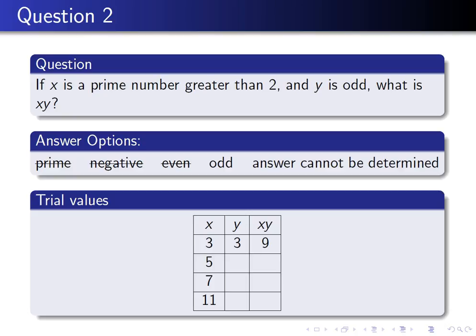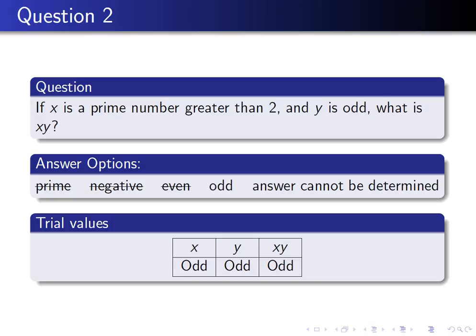I wanted to do some more trial values so I thought, what are the other prime numbers? 3, 5, 7, 11—these are all prime numbers. But I'm actually starting to see a pattern already so I'm going to jump straight onto step 3 and I'm going to say that X must be odd because the only even prime number is 2 and we know that X is not 2, and Y must be odd. So X times Y must be odd. Hence the answer is odd.